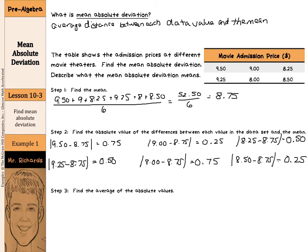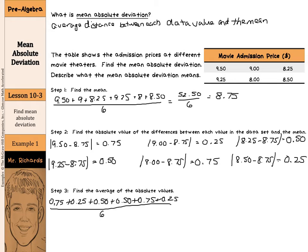So now we've found the differences between each value and the mean. Next we'll find the average of these. We'll take the 75 cents, 25 cents, 50 cents, the other 50 cents, another 75 cents, and our last 25 cents, and we'll divide that by the six data values. These add up to $3.00. Divide by six, and you get a mean absolute deviation of 50 cents.